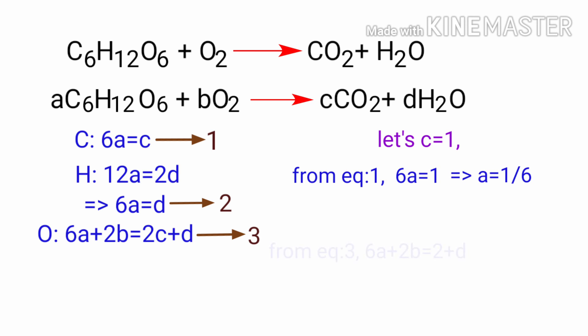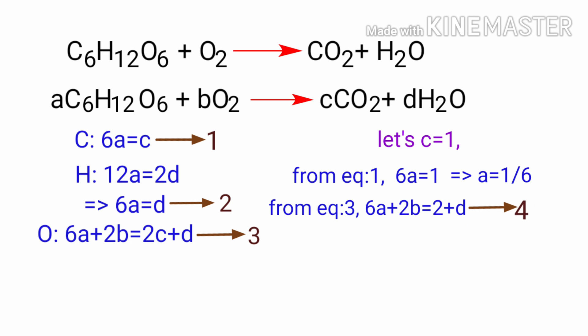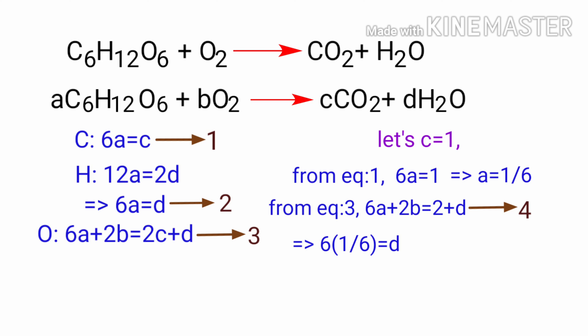From equation 3, 6A + 2B = 2 + D. Now apply the A value in equation 2: 6A = D, so D = 1. Now apply the A and D values in equation 4 to find B.